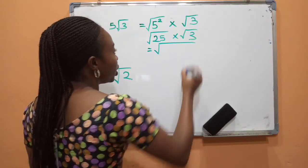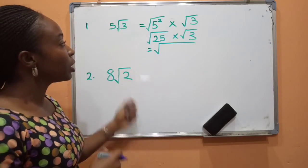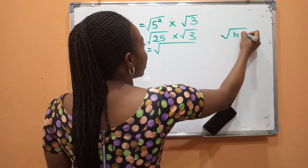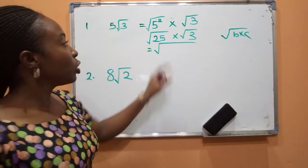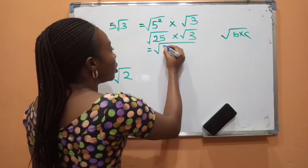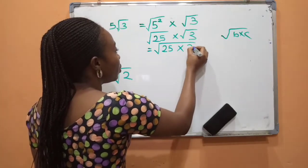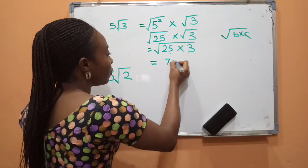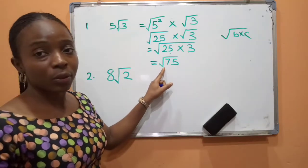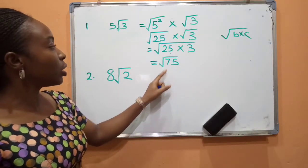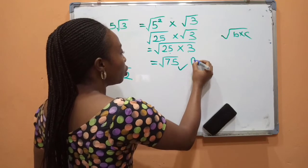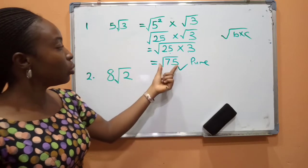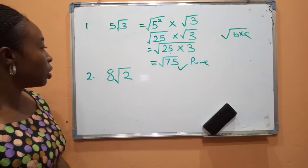Remember the multiplication rule: when you have root B times root C, it gives you the root of B times C. That's exactly what's occurring here. What is the square of 5? The square of 5 is 25. So we have root 25 times root 3, which gives us 25 times 3 under the root. By the time we say 25 times 3, we are going to have root 75. So we have succeeded in converting 5 root 3 to a pure salt — the answer is root 75.